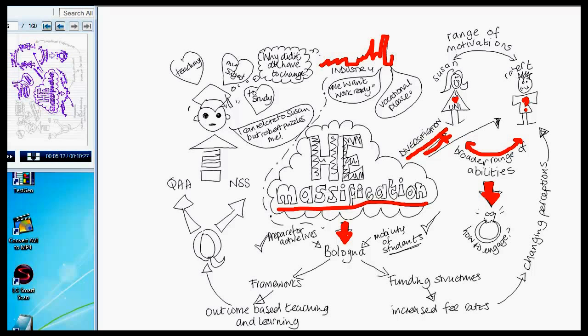So, out of Bologna came frameworks. Frameworks for educational achievement, for measuring how well universities compare against each other, for making sure that mobility of students is possible because students can move between universities. And another by-product of this was a change in funding structures, which has been added to lately by the kind of increased fee rates that students face.